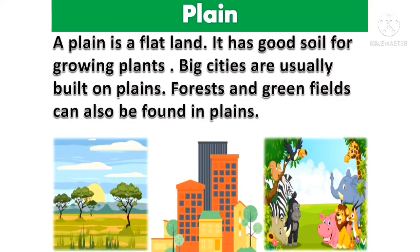Plain. A plain is a flat land. It has good soil for growing plants. Big cities are usually built on plains. Forests and green fields can also be found in plains.